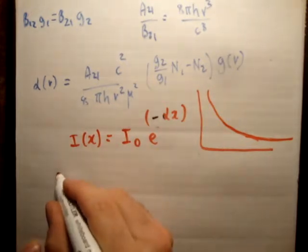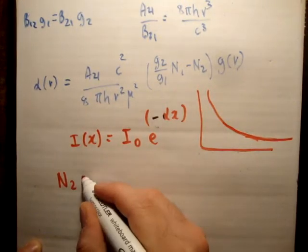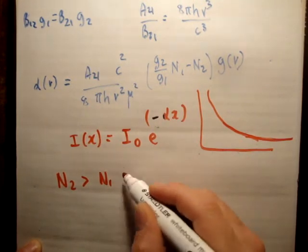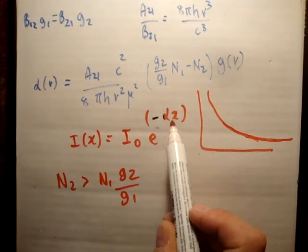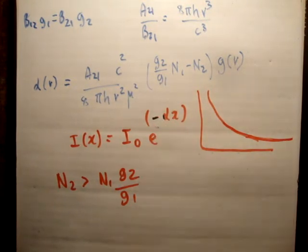We can see that if n2 is greater than n1 times g2 over g1, the alpha would be a negative number. So, a negative alpha times a negative number is going to be a positive number, and you're going to get growth.